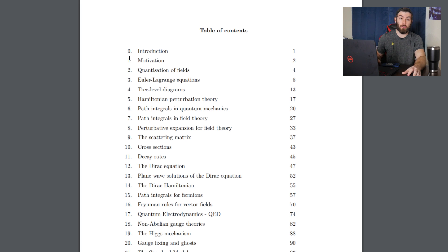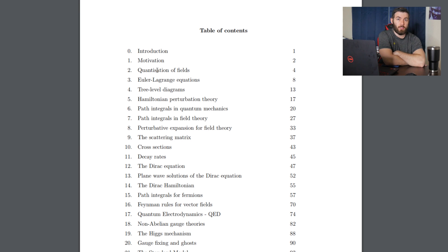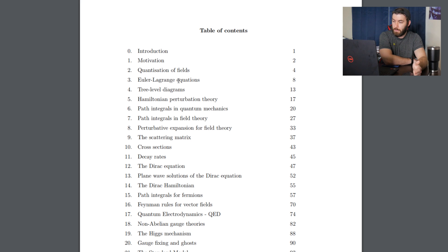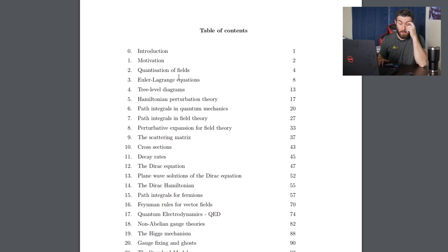So QFT1 covered the introduction and motivation, which is probably going over things like black body radiation and light. Chapter two is quantization of fields, which makes perfect sense since the first semester is taught by someone who does perturbative QCD, so they would lean heavily on the second quantization approach. Chapter three is Euler-Lagrange equations — from that I expect they went over classical field theory initially. Chapter four is tree level diagrams, so Feynman diagrams but without loops. Chapter five is Hamiltonian perturbation theory — I wonder if that's old-fashioned perturbation theory from field theory textbooks or a refresher on basic perturbation theory from regular quantum mechanics.